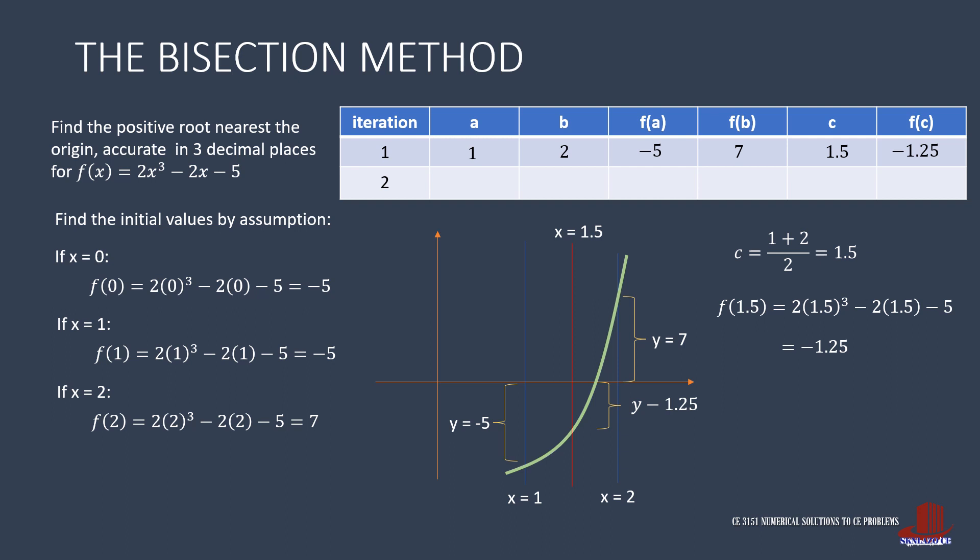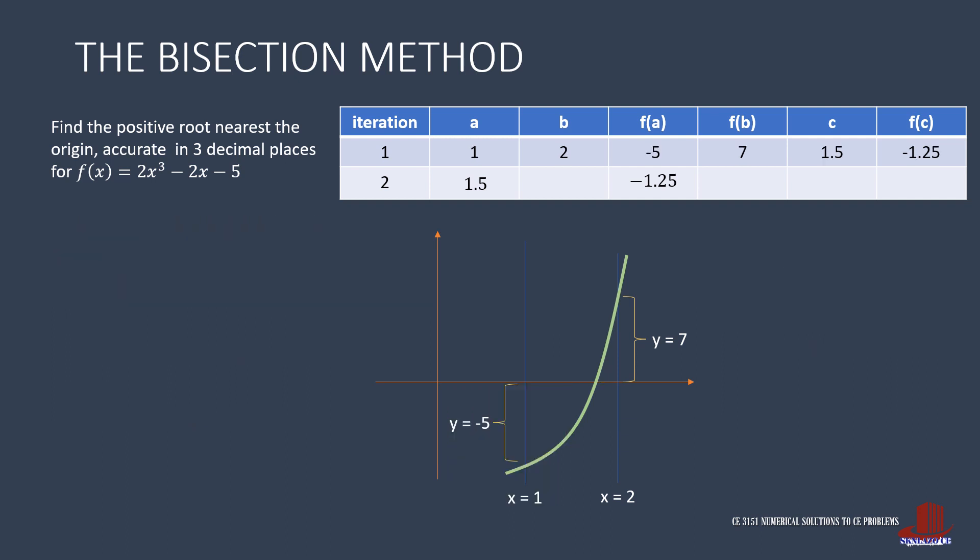From this illustration, it is noted that the x-intercept is at the second half of the interval, which means the first half will have to be disregarded, making the new A as 1.5 and its F of A is negative 1.25. The value of B will remain just the same at 2, and its F of B is still 7.